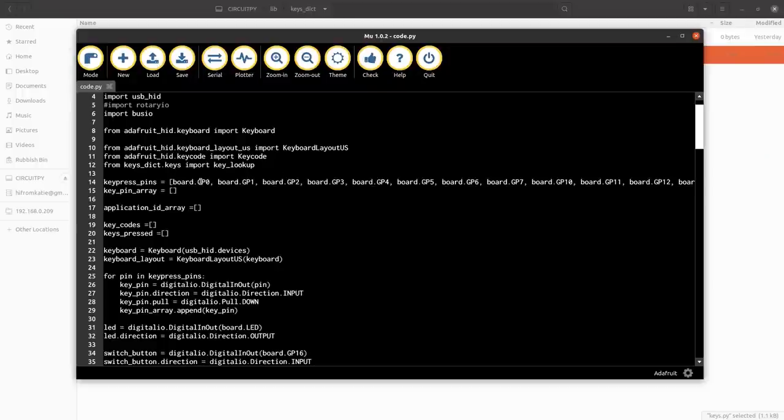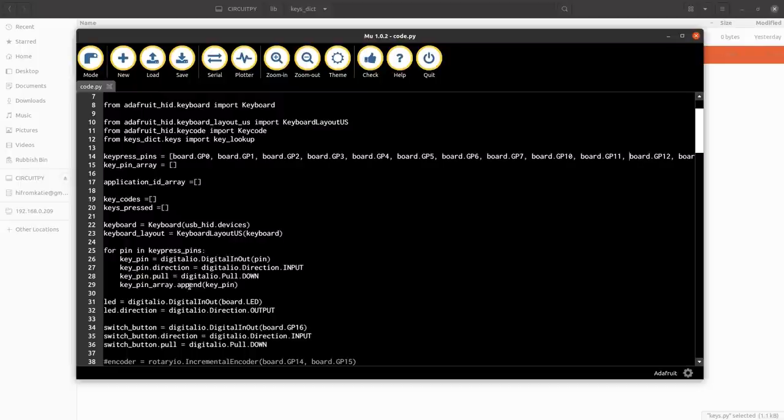I'm setting up which pins I'm using on the Pico for my switches and making these arrays, setting up, setting all those pins for the switches as inputs with a pulldown and adding them to the array of pins that can be used.